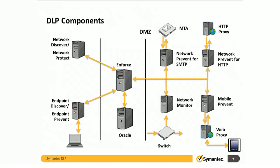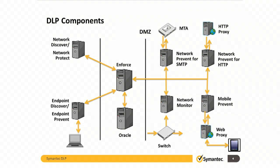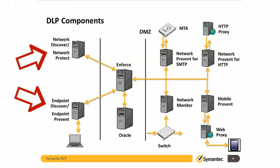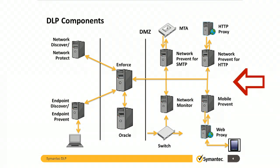Here we see a basic overview of the DLP architecture. The middle section is comprised of the DLP management components, the Enforce console, and Oracle database. The servers on the left represent detection servers used to scan designated network devices inside the corporate LAN. These are typically scheduled events. The servers on the right represent detection servers that receive traffic from other network devices and modify the data as needed before it leaves the environment.